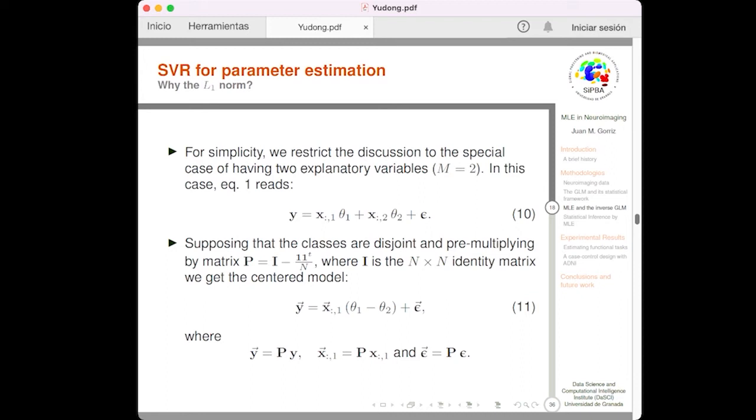Well, let me go into some more detail about the connection. For simplicity, we are going to restrict the discussion to a special case of having two explanatory variables only. M is equal to 2. So, in this case, the equation 1 reads as shown in the equation 10. We have only two parameters to be determined. If we make some trick, we play some trick, we can transform equation 10 in a model with just one parameter. By applying this matrix b, so we can transform 10 into 11, where we only have to determine one parameter, that is the contrast, theta 1 minus theta 2.